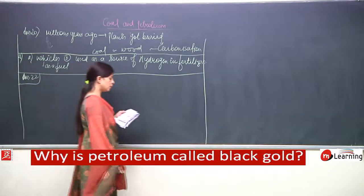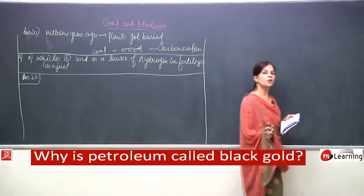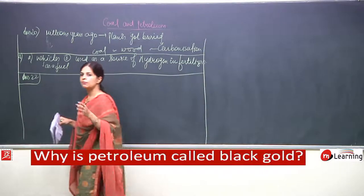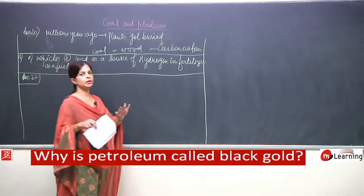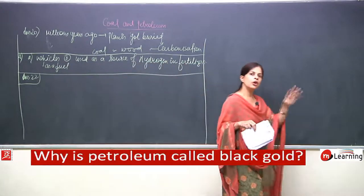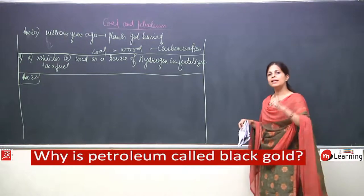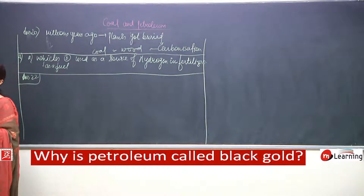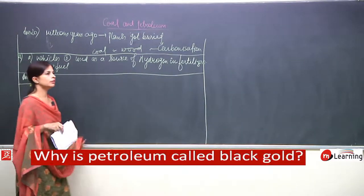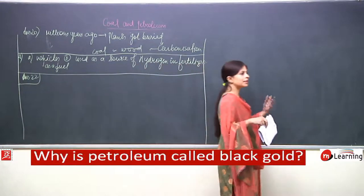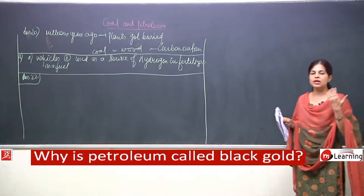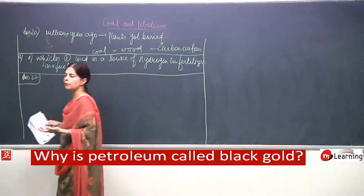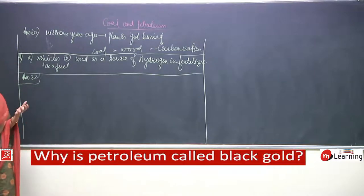Answer 22: why is petroleum called black gold? The word petroleum comes from two words — petra meaning rocks, and oleum meaning oil — so it means rock oil, the oil entrapped between rocks. It is called black gold because the economy of the country depends upon it, and many important fractions and components obtained from it are used in the manufacture of various things, including fuels like petrol and diesel.